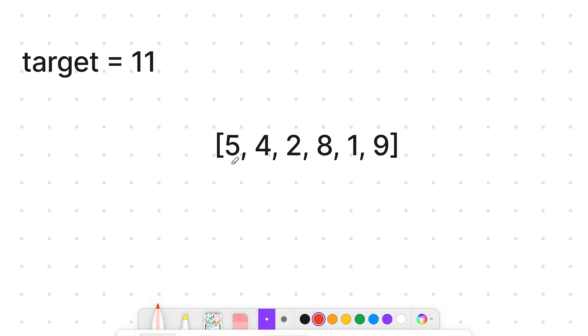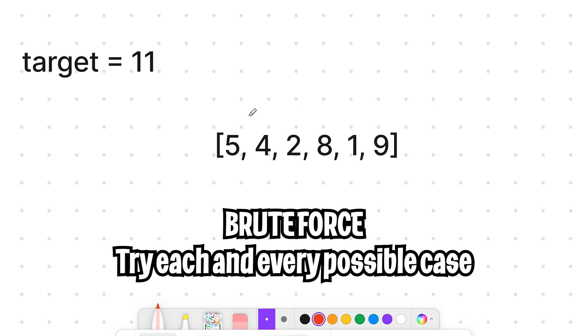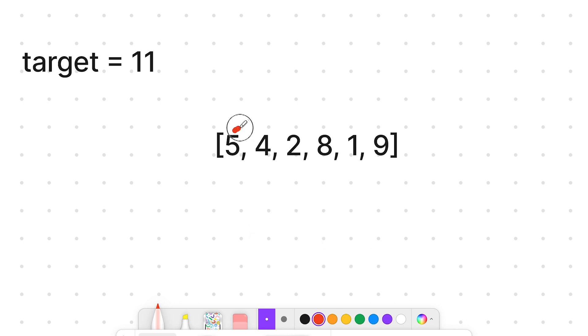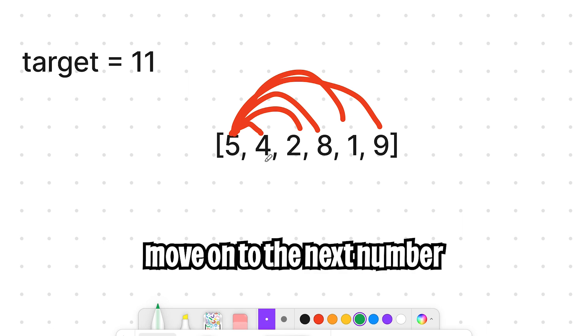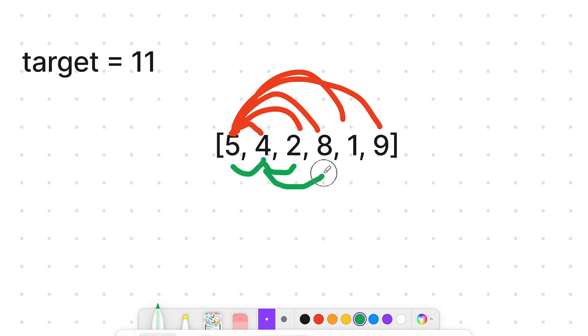With code, we can solve this problem easily by just brute forcing it, where we basically try each and every combination possible. For example, we can do 5 plus 4, 5 plus 2, 5 plus 8, 5 plus 1, and 5 plus 9. And if none of these values work, we can move forward to 4 and try 4 plus 5, 4 plus 2, 4 plus 8, 4 plus 1, 4 plus 9. And eventually we'll get 2 plus 9, which equals 11.